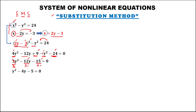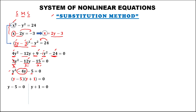From this quadratic equation, we use factoring to solve for y. The factors for y squared are y times y, and the factors for 5 are 5 times 1. Since the middle term is negative, the bigger number must be negative: (y minus 5)(y plus 1) equals 0, giving y equals positive 5 and y equals negative 1.